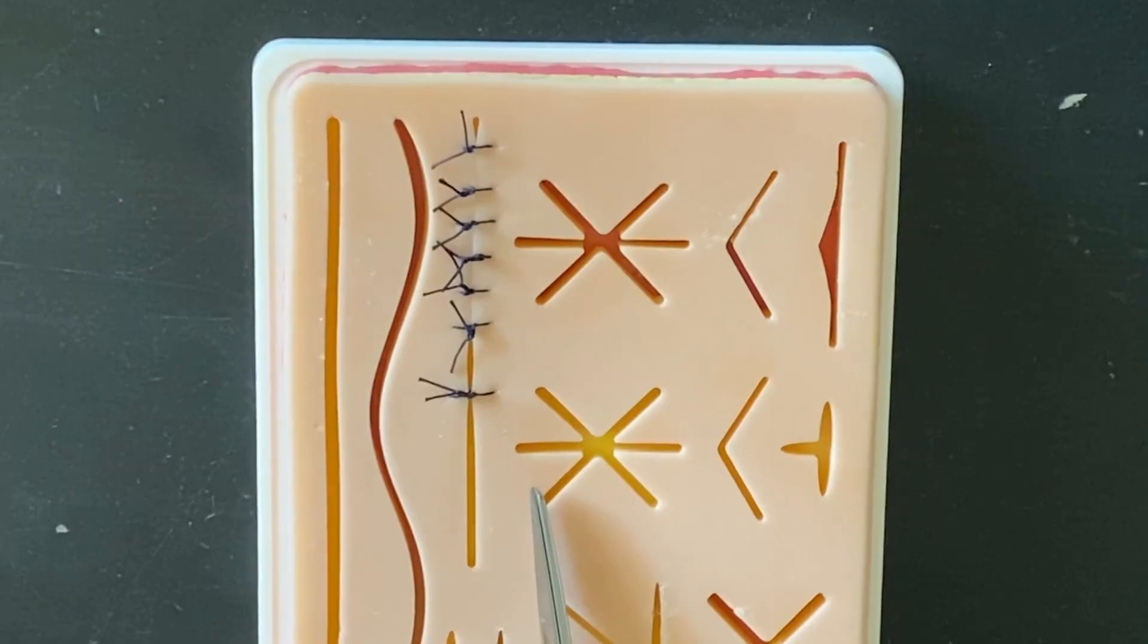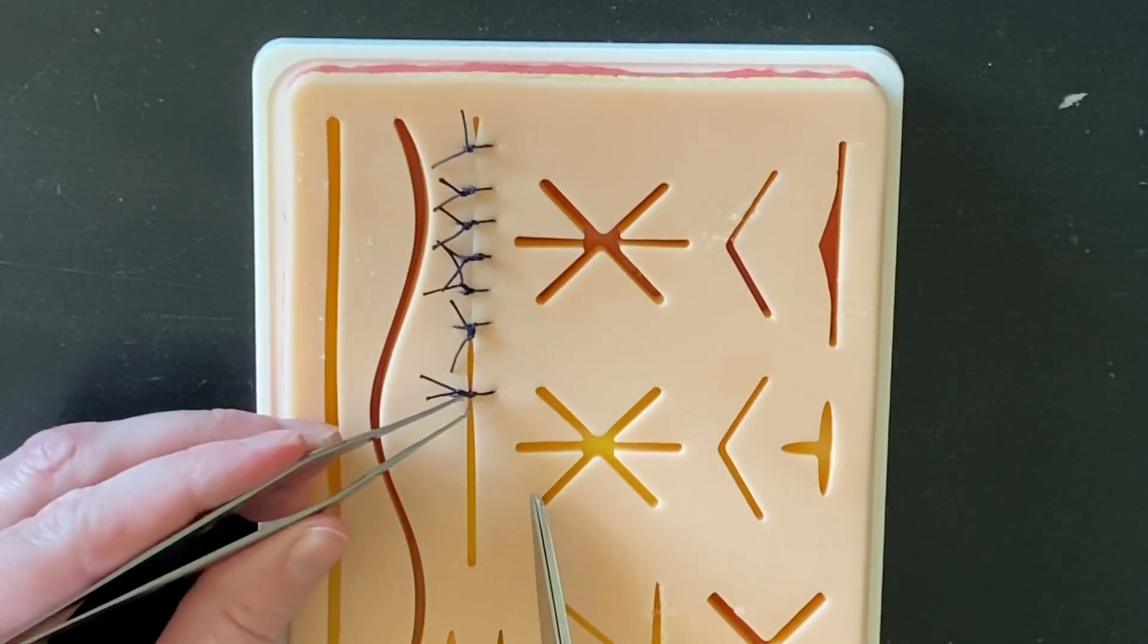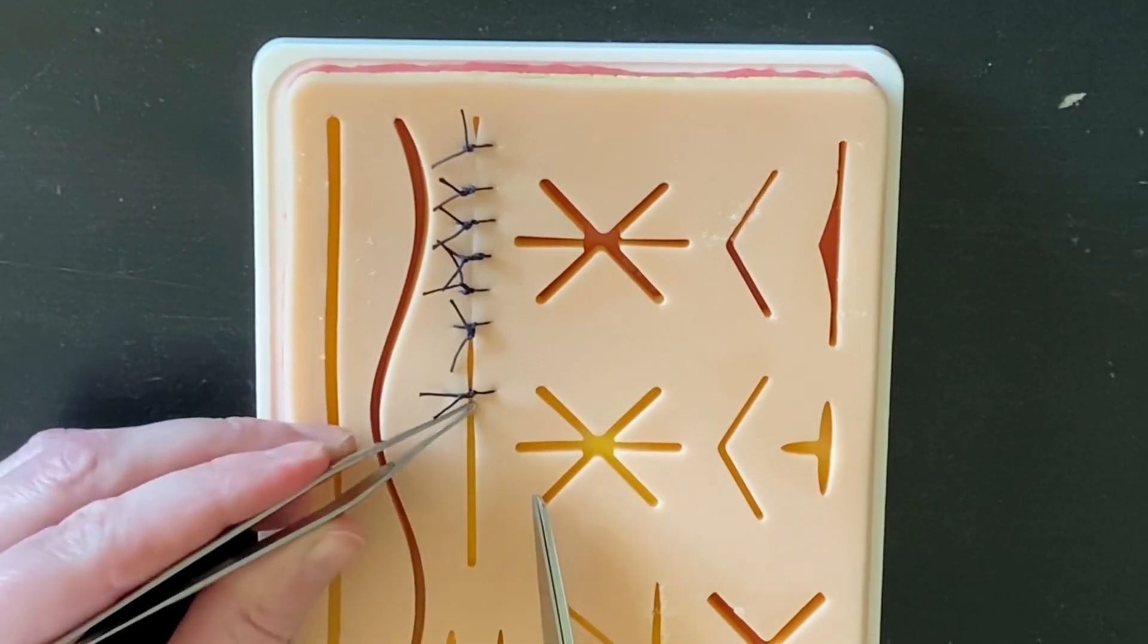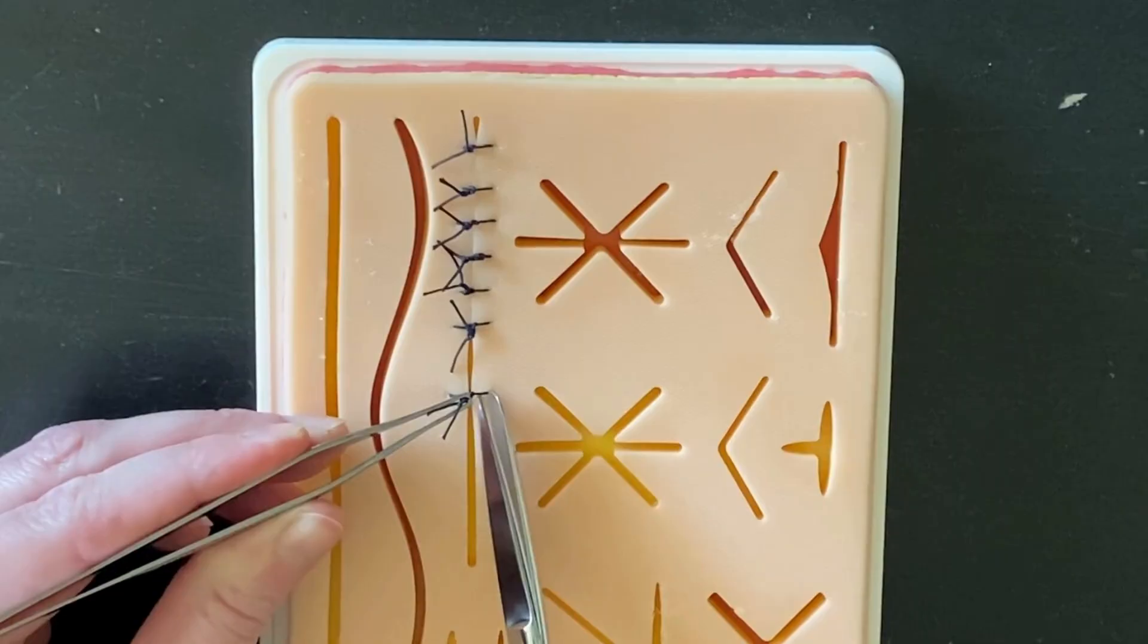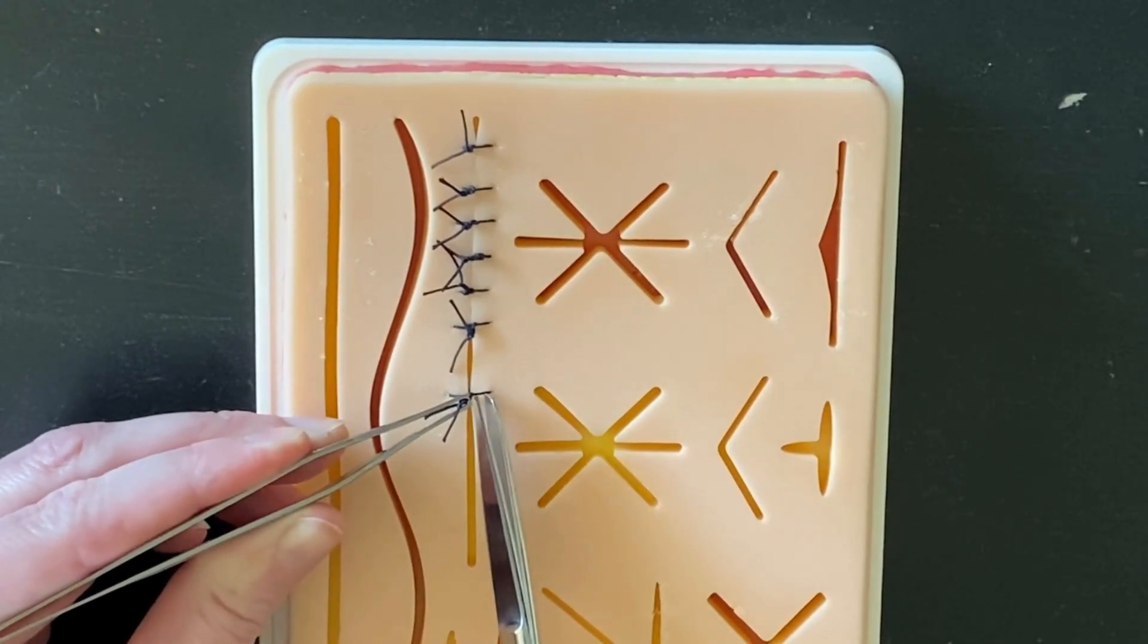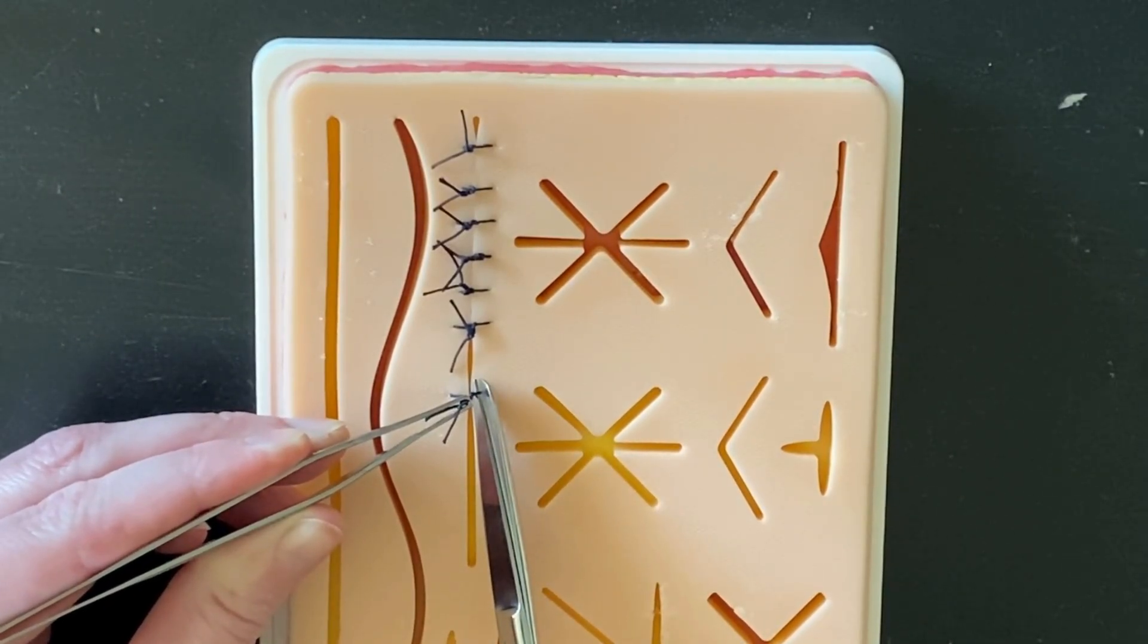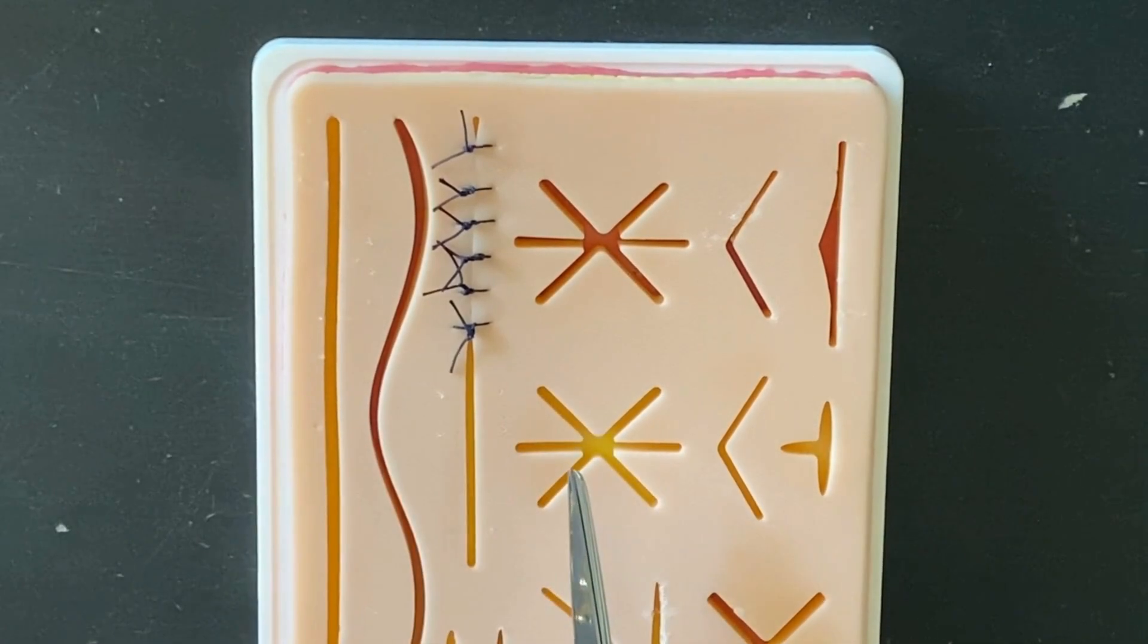When you pull it out, you're pulling the suture in one motion instead of having to search for part of the suture that's buried underneath the skin. And again, pulling the knot away from the skin, inserting the small tine of the suture scissors and cutting that way.